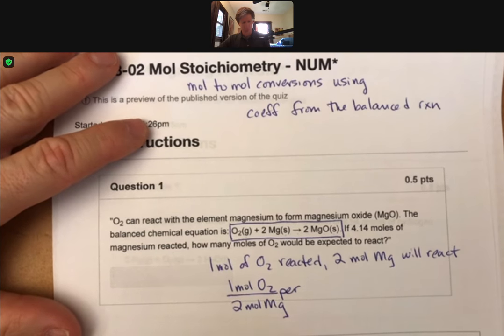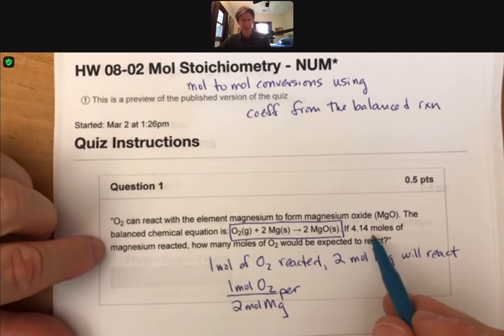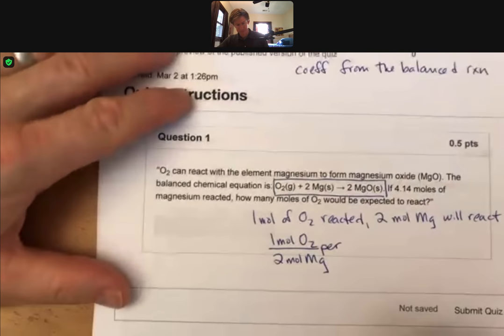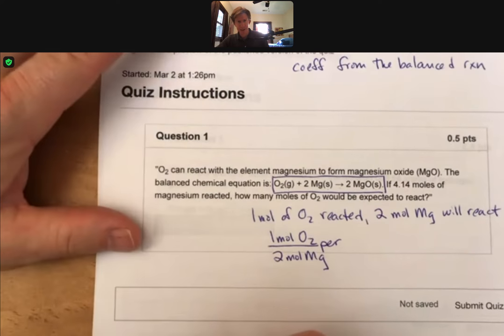Now that we have this as our unit conversion factor, we can start with our moles of magnesium, 4.14. Let's put it right there.